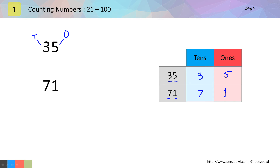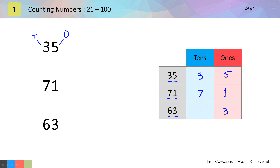Let us take one more example. This time we have number 63. In this case also, 3 will go at the 1s place because it is on the right hand side, and 6 will go at the 10s place because 6 is on the left hand side.